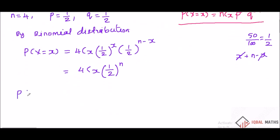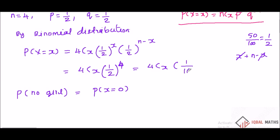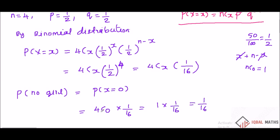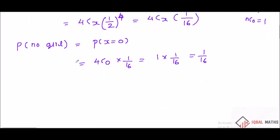First, what we do is no girl — x equal to 0. P of X equal to 0: we calculate 4C0 into (1/2)^4. 2 power 4 is 16, so this is 4C0 into 1 by 16. Now nC0 is 1, so 4C0 is 1. Therefore P of X equal to 0 equals 1 by 16. So F of X is 1 by 16.